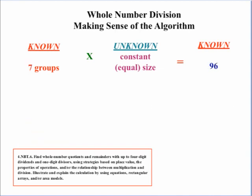So let's start off with an example, and so we can make sense of the algorithm. And let's say that we have a total of 96, and we know that we want seven groups. What would the size of the group need to be?